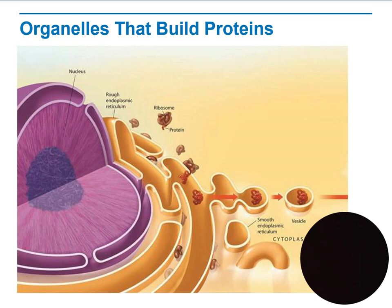Proteins carry out so many of the essential functions of living things, including the synthesis of macromolecules such as lipids and carbohydrates. This is a big part of how cells develop to produce and distribute these molecules.